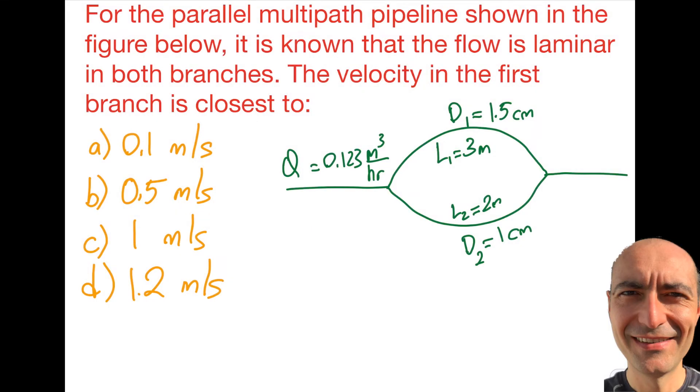Alright everybody, welcome back to another fluid exam question. So let's get to business. The question says I have a parallel multipath pipeline as shown in the figure below. Basically you can see the volumetric flow rate is given over here. There's branch one and branch two, and then they combine together. I gave you the diameter in each and the length of each section as well. It is known that the flow is laminar in both branches. The velocity in the first branch is closest to... From the get-go, let me tell you this is not one of the easiest questions to solve, but we gotta do what we gotta do.